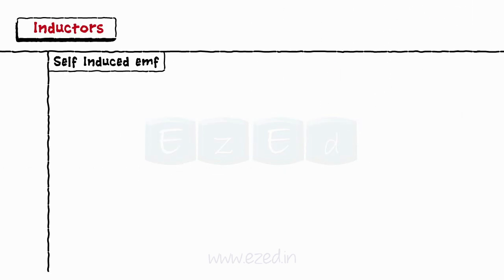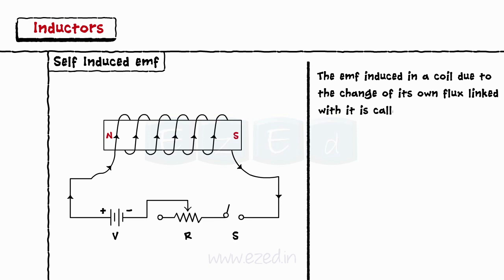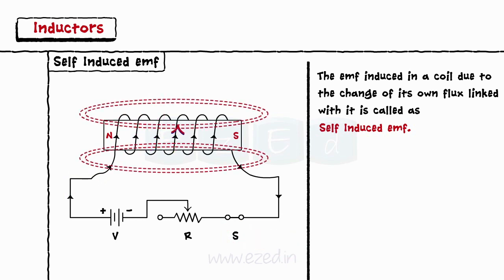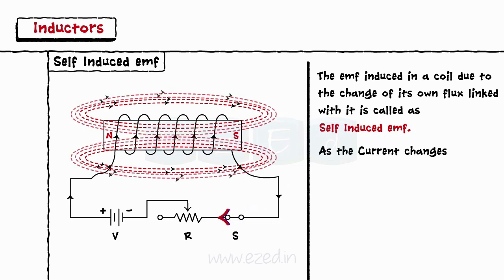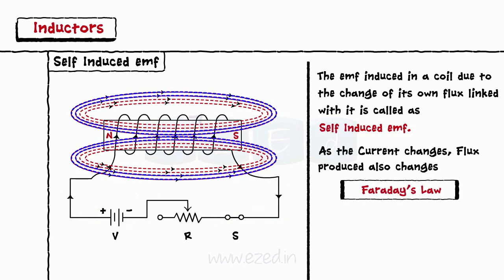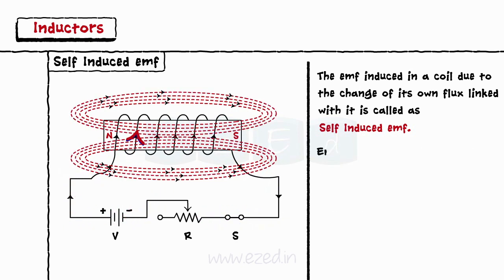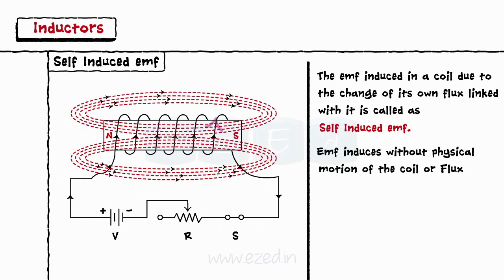Let's first study self-induced EMF. The EMF induced in a coil due to the change of its own flux linked with it is called self-induced EMF. Consider a coil having N turns carrying current I with switch S. When the switch S is closed, as the current flows through the coil, it will produce flux in the coil. This flux links with the coil itself. As the magnitude of the current changes using a variable resistor, the flux produced also changes. According to Faraday's law, due to the rate of change of flux linkages, an EMF gets induced in the coil. As the EMF gets induced without any physical motion of the coil or flux, the induced EMF is called self-induced EMF.